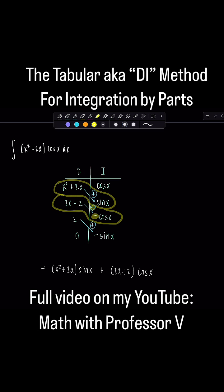2x plus 2 cosine x. And then last product is 2 times negative sine x. And we don't change the sign. So it's just going to be minus 2 sine x plus c.